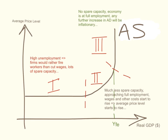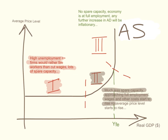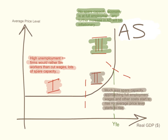So just a quick sum up. Section one: there's high unemployment, firms would rather fire workers than cut wages, and there's lots of spare capacity, so aggregate demand can increase without causing the price level to rise. Section two: there's much less spare capacity but still some; the economy is approaching full employment and wages and costs start to rise, so the average price level starts to rise. Section three: there's no spare capacity, the economy has reached full employment, and any further increase in aggregate demand will just cause inflation and a rise in the average price level.